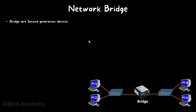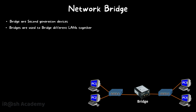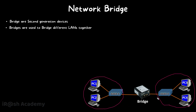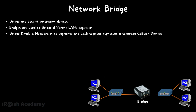Bridges are used to bridge different LANs together. LAN1 and LAN2 can connect with the help of a network bridge and work as a single local area network. A bridge divides a network into segments, and each segment represents a separate collision domain.